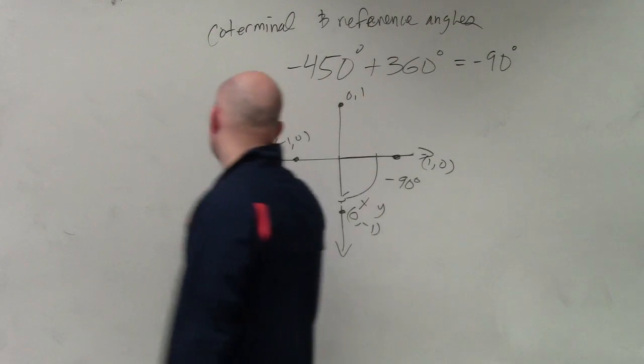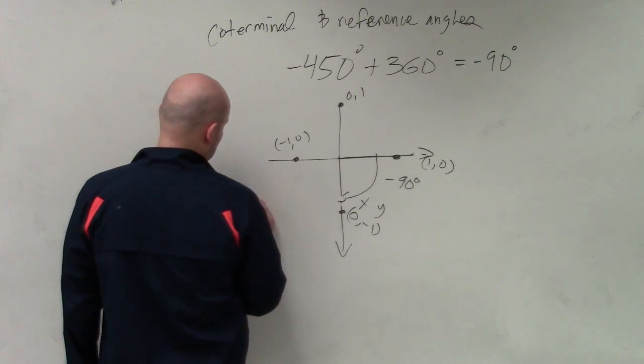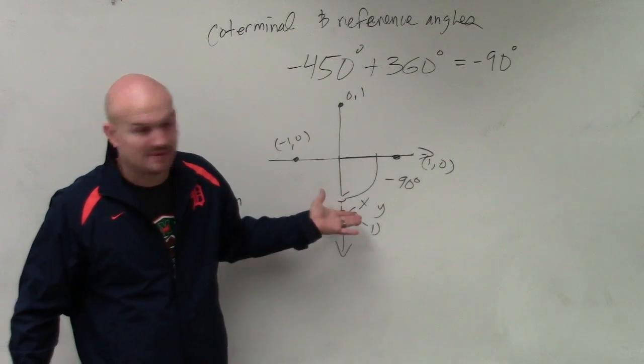So if I was going to find the sine of my angle, now remember, the sine of negative 450 degrees is the same thing as negative 90 degrees. Same thing.